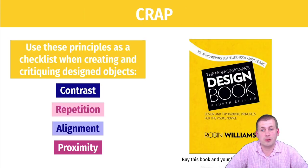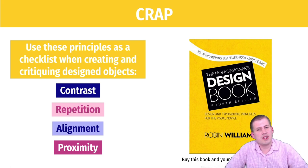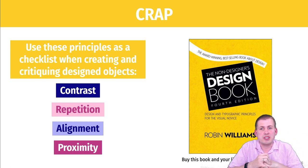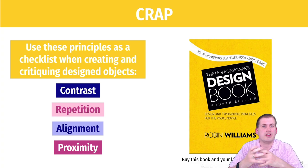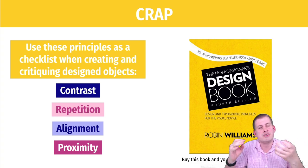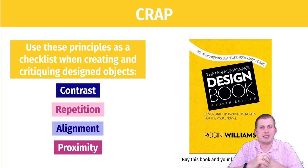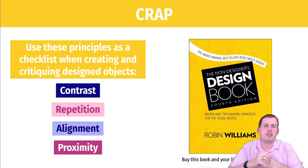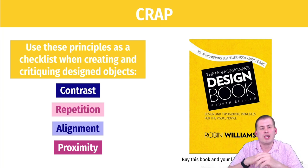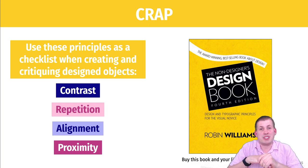CRAP stands for Contrast, Repetition, Alignment, and Proximity. This is useful because it's memorable, and you can use it as a checklist as you're critiquing designed objects or creating your own designs. You can check the contrast, see if there's repetition, check if elements are aligned on the page or screen, and check proximity to see if there are groupings.